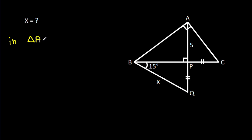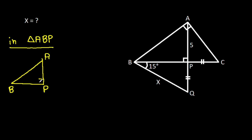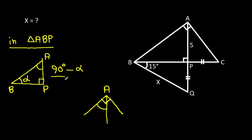In triangle ABP, angle APB is 90 degrees. Suppose this angle is alpha, then this angle will be 90 degrees minus alpha. And at point A, this angle is 90 degrees, and this angle is 90 degrees minus alpha. So this angle will be 90 degrees minus alpha.